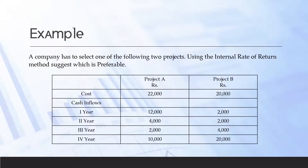Let us understand the concept with the help of an example. A company has to select one of the following two projects using the internal rate of return method. They have given details about two proposals — project A and project B. The cost of project A is 22,000 and the cost of project B is 20,000. They have also given the expected cash flow for 4 years for each project. We have to use the IRR method to calculate the internal rate of return.